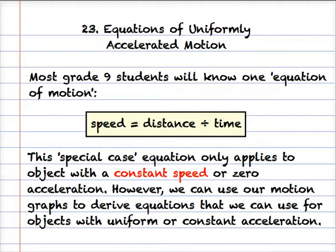In the previous podcast we saw how graphs could help us to understand the motion of objects and specifically be used to calculate their acceleration and the distance that they might have traveled. In this podcast number 23 we're going to see how we can derive equations from these graphs and then apply these equations to calculate some of the motion parameters.